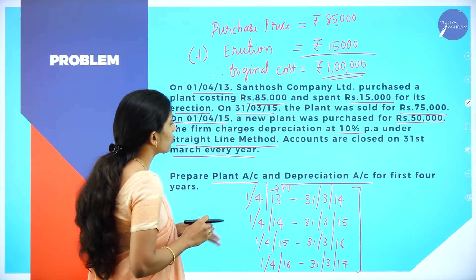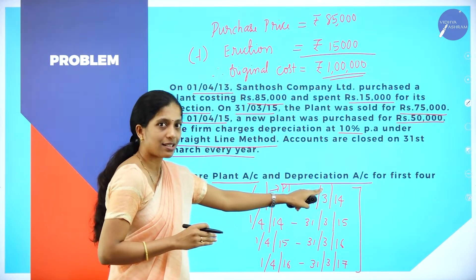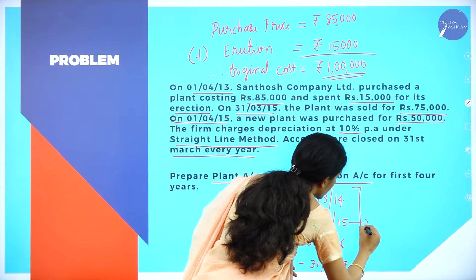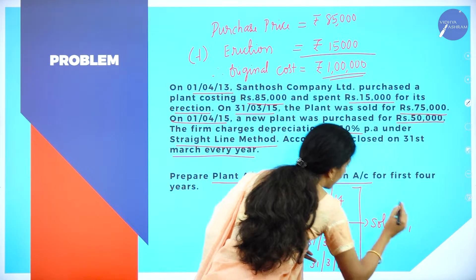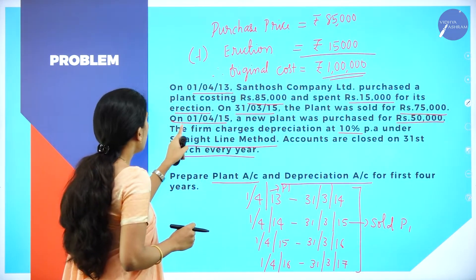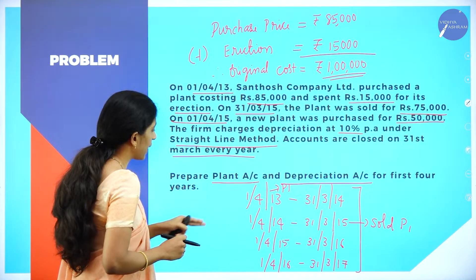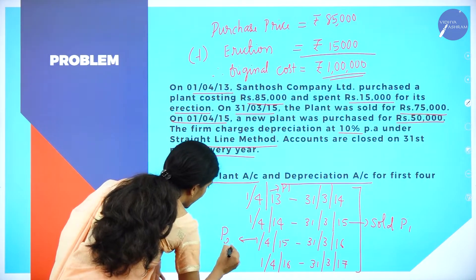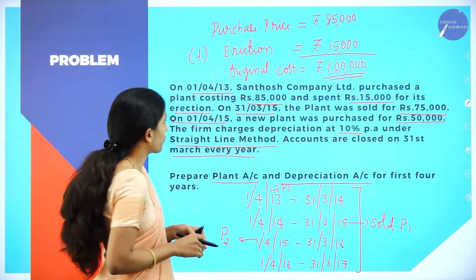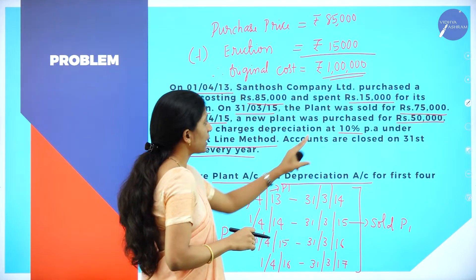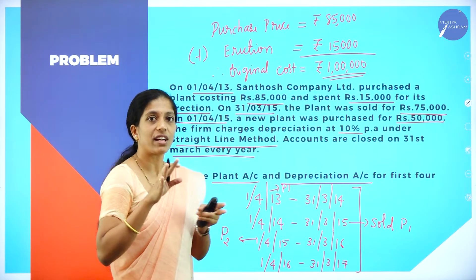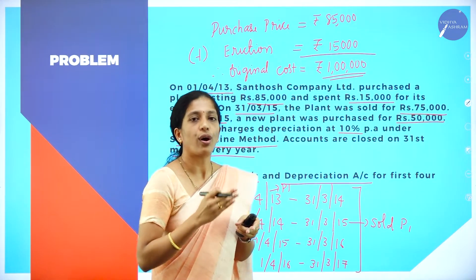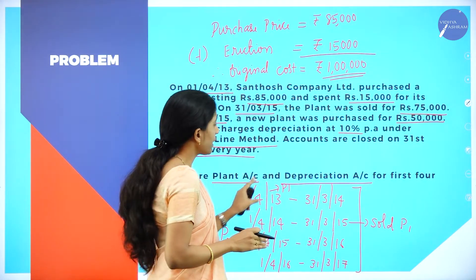On 31st March 2015, Plant 1 was sold for rupees 75,000. On 1-4-2015, at the beginning of the third year, they purchased Plant 2 for rupees 50,000. Depreciation is to be calculated at 10%. Hope you have understood the problem — first understand the problem, then solve it.